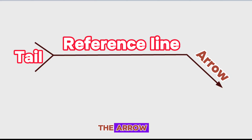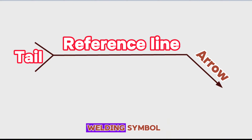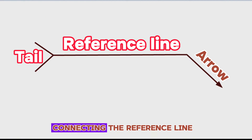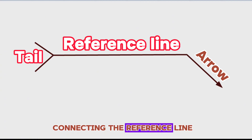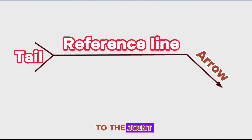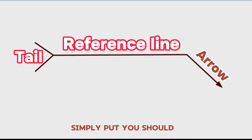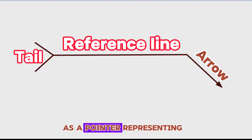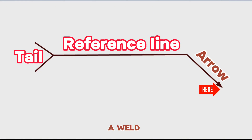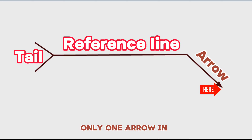The Arrow. The arrow is a crucial element of the welding symbol, connecting the reference line to the joint. The arrow points to the location where the weld is to be applied. Simply put, you should consider an arrow as a pointer representing 'weld here.' There is always only one arrow in the weld symbol.